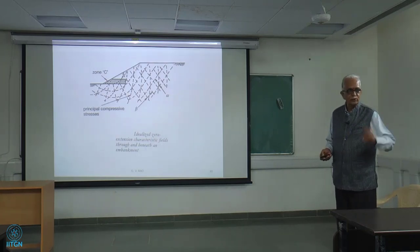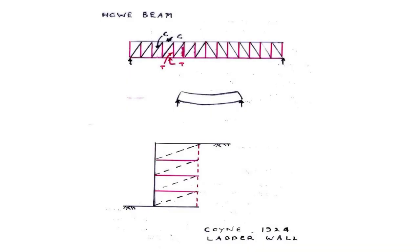The zones will give you three different pictures - you can study them easily. This is also explained very well by what we call the coin ladder wall. He picks up a drawing of a Hove beam. In this beam, whatever is shown in red is the tension member. At the bottom there is a tension member; at the top there is going to be compression. The inclined members and the top one are all in compression when the shape is like this.